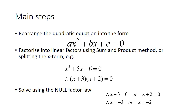So let's just go through some steps here. The main steps in solving a quadratic through factorization: first thing we need to do is rearrange our equation into this form here. So we write the x squared term first, followed by the x term, followed by the constant.